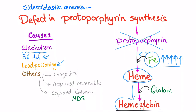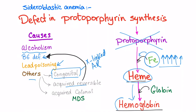We also have a congenital type of sideroblastic anemia, mostly X-linked or can be autosomal recessive. Then there is acquired reversible, such as vitamin B6 deficiency. And acquired clonal, which is part of a syndrome called myelodysplastic syndrome or myelodysplasia. Since it's associated with myelodysplasia, there is an increased risk of leukemia, especially AML.